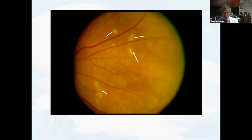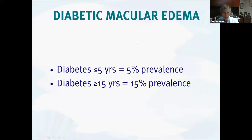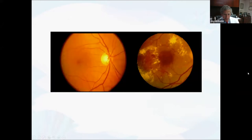Hard exudates — lipid that has leaked out — and microaneurysms of the retinal vessels can be seen. Hemorrhaging, either dot-blot hemorrhages or flame-shaped hemorrhages, are both characteristic. Cotton wool spots, which are nerve fiber layer infarcts, can also be present. As far as the development of macular edema — the component of nonproliferative retinopathy that does cause vision loss — patients who have had diabetes less than five years show only about 5% developing macular edema. More than 15 years, 15% will have it, and that percentage goes up with time.